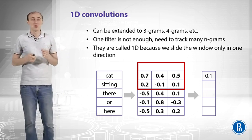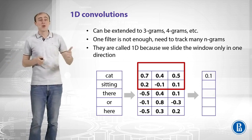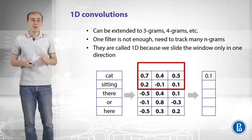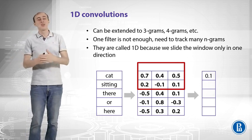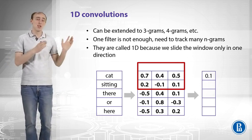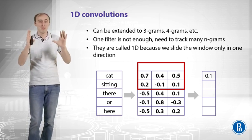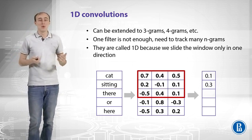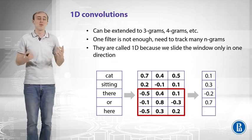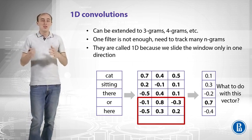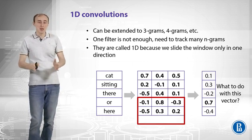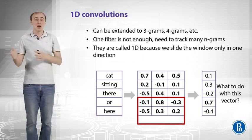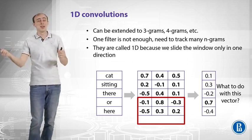Let's see how the sliding window works. We have an input sequence 'cat sitting there or here', with word2vec representations for each word and a sliding window of size 3. We add padding so the output size matches the input size. Convolving the first patch gives values like 0.1, 0.3, 0.0, -0.2, 0.7, 0.4. The window slides in only one direction — you can think of the sequence of words as occurring along a time axis.